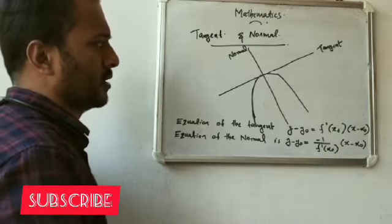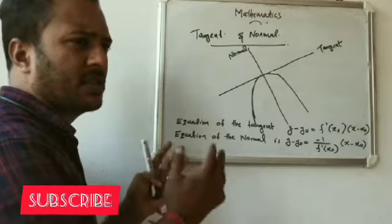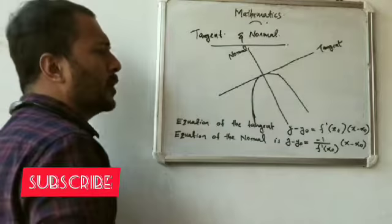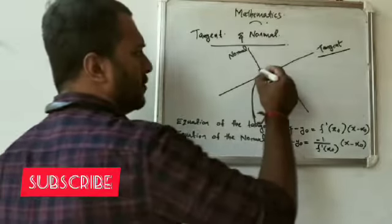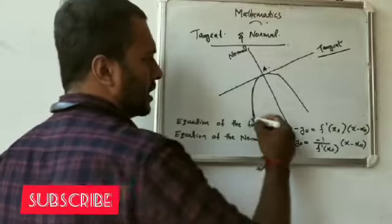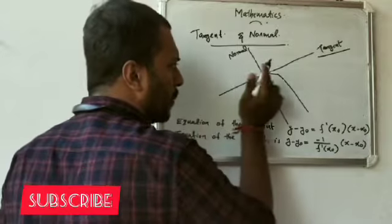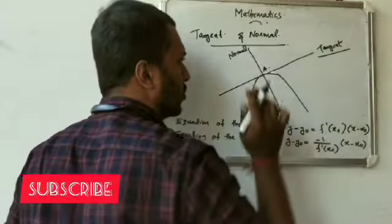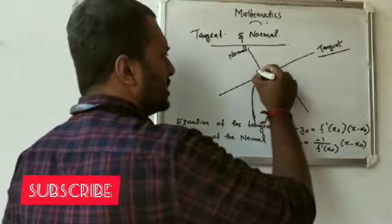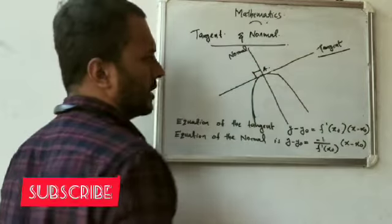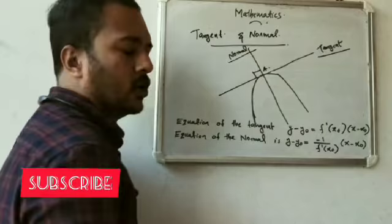What is the tangent normal? The tangent is a line. The tangent is a perpendicular line — this tangent is a perpendicular line which is the normal line.